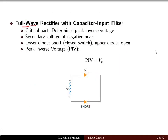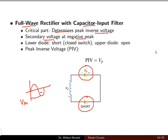Now let us take the example of the full-wave rectifier with center tapping and capacitor input filter. We have two diodes in this case because it is center-tap full-wave. Again, the critical part is to determine the peak inverse voltage. When the AC cycle is applied to the secondary of the transformer, at the negative peak — which is minus Vm — that voltage appears on the secondary. We have two diodes; let us take the lower diode as a closed switch. When it is short, current flows through this diode, and the upper diode is reverse biased, treated as an open circuit. The peak inverse voltage in the negative half cycle is this entire voltage appearing in the secondary of the transformer, which is VP.